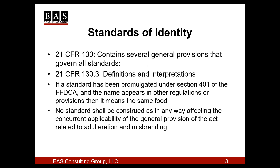The standards regulations have some general provisions that apply across all food standards. In Section 130.3, the regulation lays out that no matter where in the regulations the name of a standardized food appears, it would mean the same thing. FDA requires that all foods called peanut butter are the same thing, no matter where in the regulations they appear. Section 130.3 also says that all other regulations about adulteration and misbranding also apply to standardized foods and their ingredients.